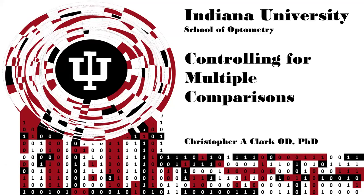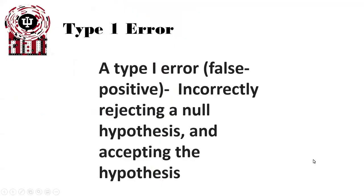This is controlling for multiple statistical comparisons. Let's quickly review what a type 1 error is. A type 1 error, or a false positive, is incorrectly rejecting a null hypothesis in favor of the accepted hypothesis, or the hypothesis used in the study.